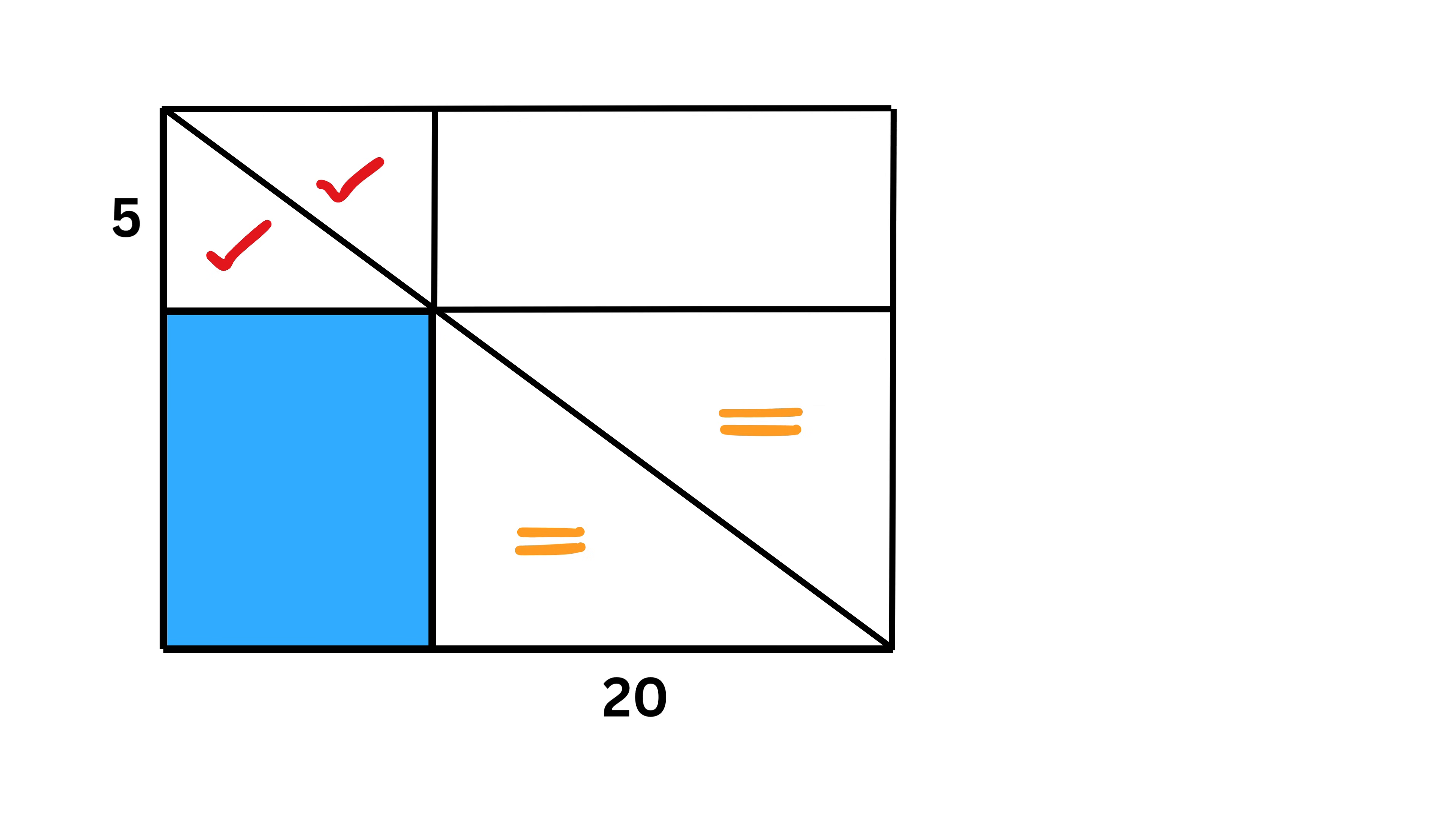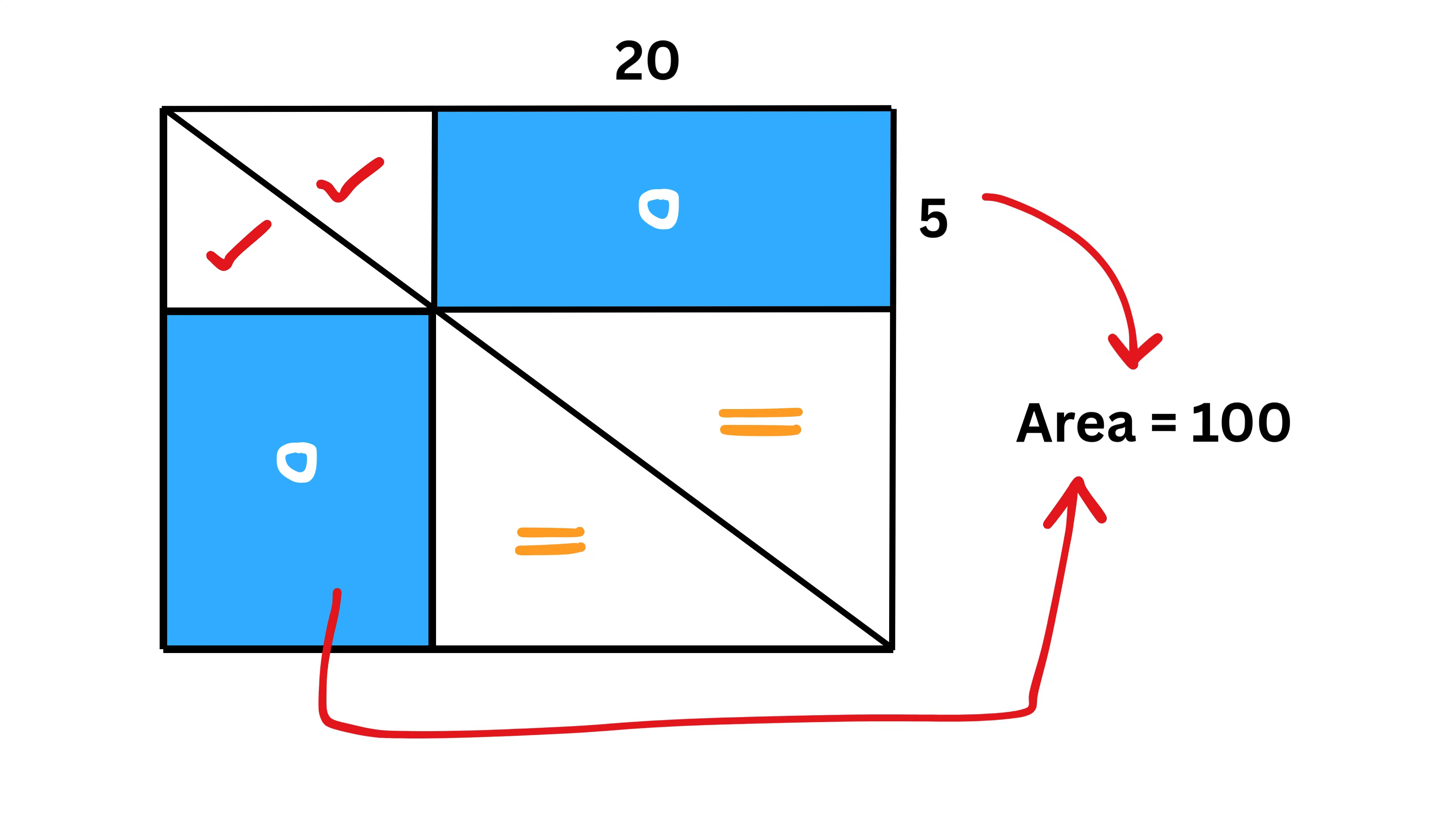This means that the area of this blue region will be the same as the area of this rectangle. Now the sides of this rectangle are 20 units and 5 units and thus the area of this rectangle is 20 times 5 or 100 square units. This means the area of this blue shaded region is also equal to 100 square units.